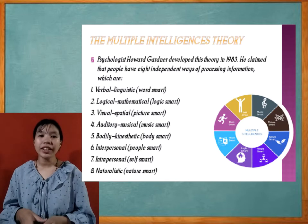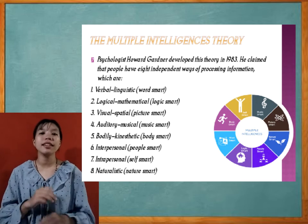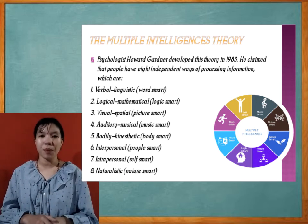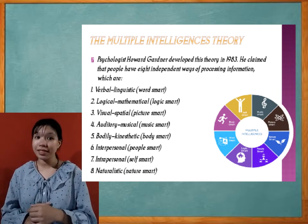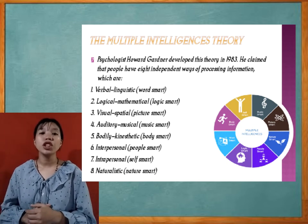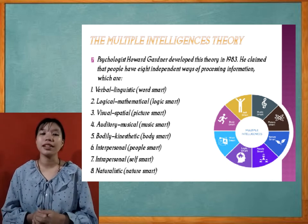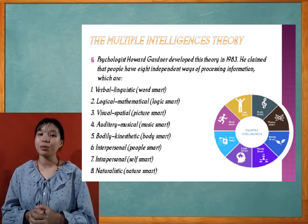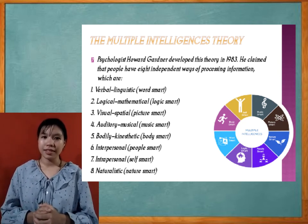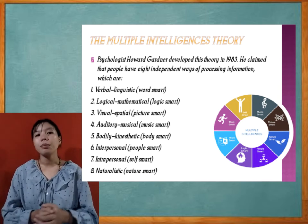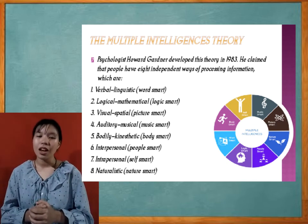Psychologist Howard Gardner developed this theory in 1983. He claimed that people have eight independent ways of processing information. Number one: verbal or linguistic, word smart. Number two: logical mathematical, logic smart. Number three: visual spatial, picture smart. Number four: auditory musical, music smart. Number five: bodily kinesthetic, body smart. Number six: interpersonal, people smart. Number seven: intrapersonal, self smart. Number eight: naturalistic, nature smart.